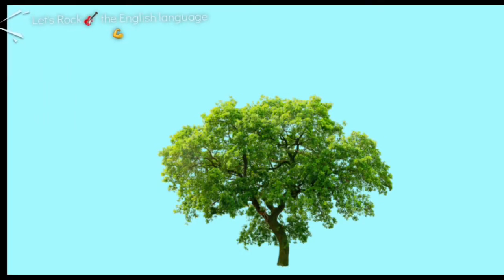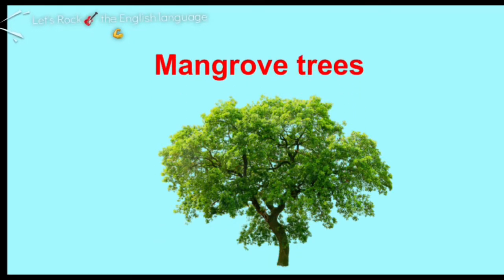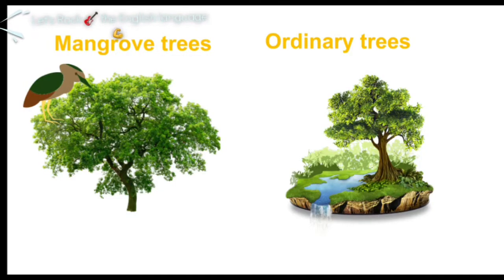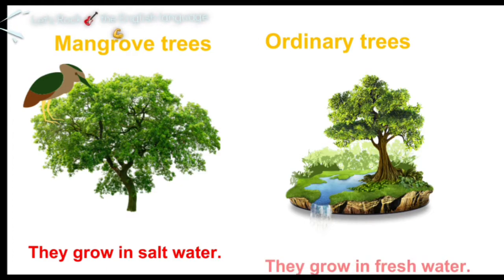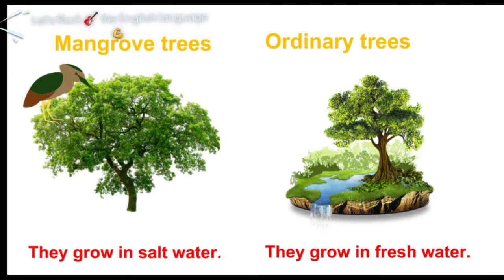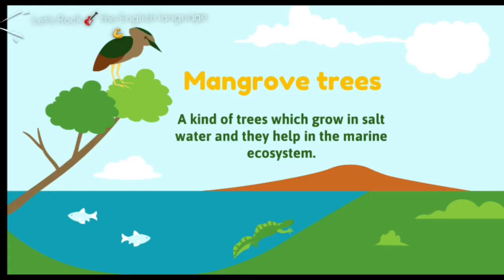We have a special kind of plants and trees which grow in the marine ecosystem, which is the mangrove trees. What's the difference between the mangrove trees and the ordinary trees? Of course there is a big difference. The mangrove trees grow in salt water and the ordinary trees grow in freshwater — the water of the lakes and the rivers. But the mangrove trees grow in salt water, which is the oceans and the sea. Mangrove trees are a kind of trees which grow in salt water and they help the marine ecosystem in many ways.